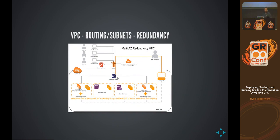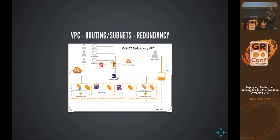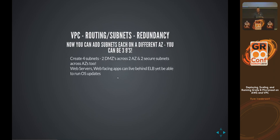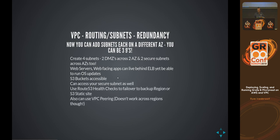For redundancy, in a multi-availability zone setup you spread things across availability zones with a load balancer, or use simple Route 53 traffic in some kind of round-robin scheme. You can create four subnets across two DMZs with two AZs and two secure subnets. Route 53 health checks can provide failover as well — it's a little more inexpensive than a load balancer. You can also use VPC peering across availability zones.